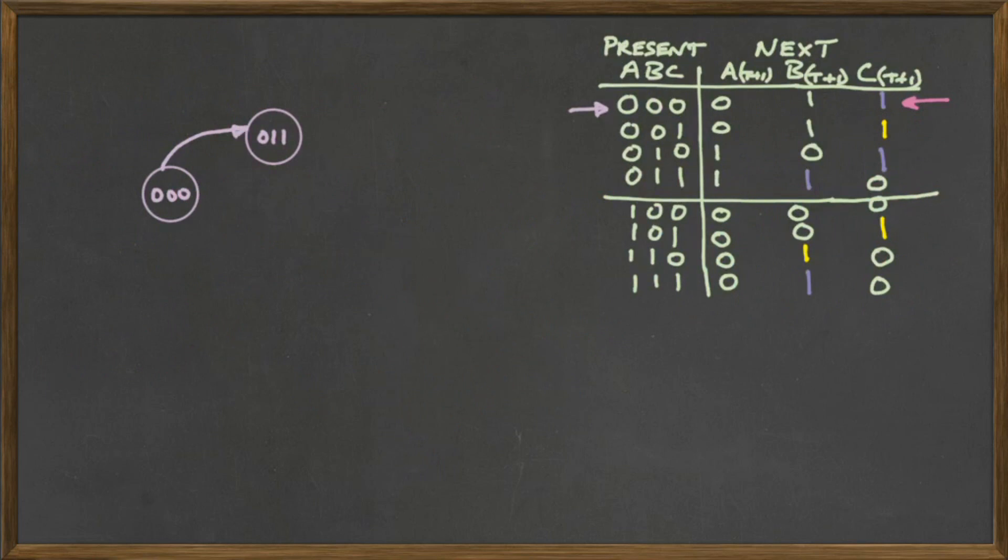All right, so we start now with the other cyclical finite state device. Whenever we start with a cyclical finite state device, we can start from any row, but we prefer to start from the 0. It's a logical place to start. And we see that the 0 transitions to 3. So we've drawn the 0 and the 3 state and connected them with an arrow going from 0 to 3.